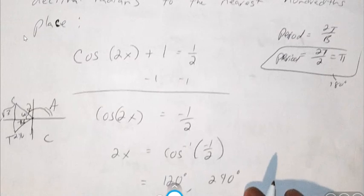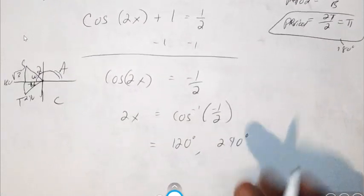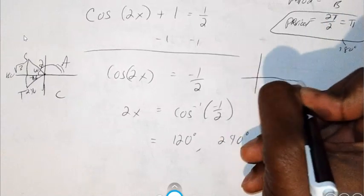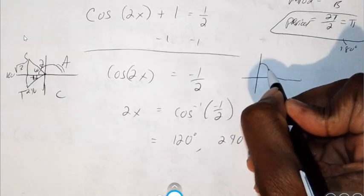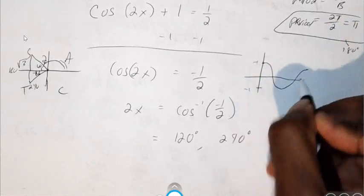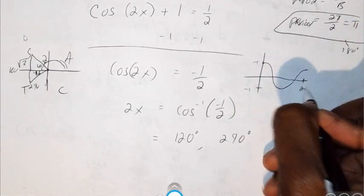So what I know is that this graph, instead of being a regular cosine curve which looks something like this, starts off at 1, bottoms out at negative 1, ends its period at 2 pi.